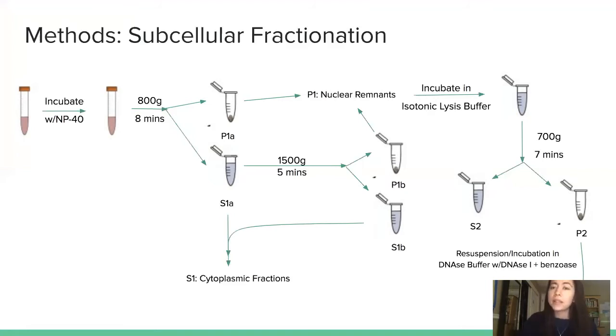Then pellet 1 was incubated in isotonic lysis buffer and centrifuged at 700g for 7 minutes. Supernatant 2 was extracted to ensure complete purification of pellet 2, the isolated nuclear components, which was then resuspended and incubated in DNase buffer with DNase 1 and benzonase, then moved on for analyses.